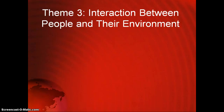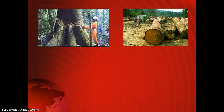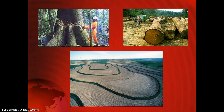The third theme is interaction between people and their environment. Wherever people live, they inevitably change their environment. This might be as simple as painting a bedroom in a new house, or as extensive as creating highways or cities. Some examples of people changing their environment include the cutting down of trees — deforestation — for purposes such as building cities or creating fields. These changes can either help or hinder the environment, and sometimes there are hidden costs.